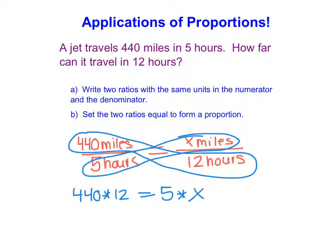And then from here, we're going to solve. So here we're going to take 440 times 12. So that gives us 5,280. And that equals 5x. We then need to get the x alone, so we divide both sides by 5. So that gives me x equals about 1,056 miles.